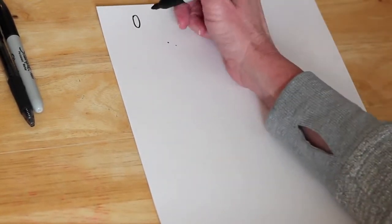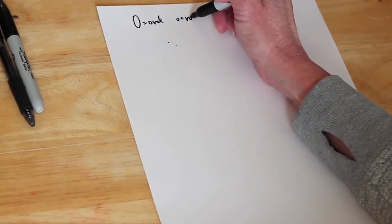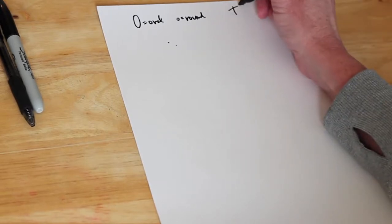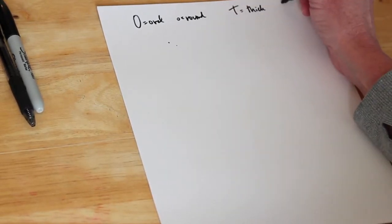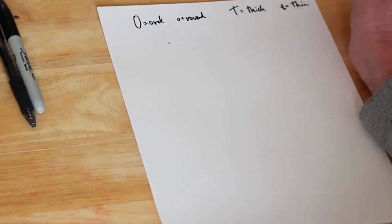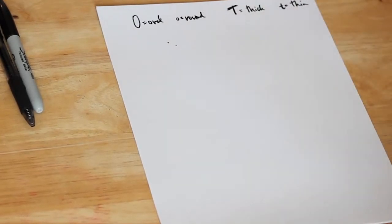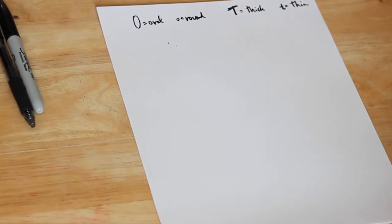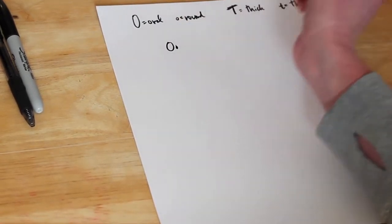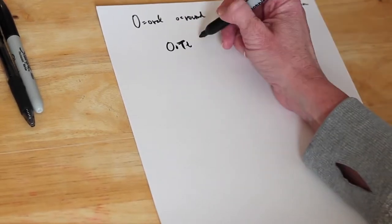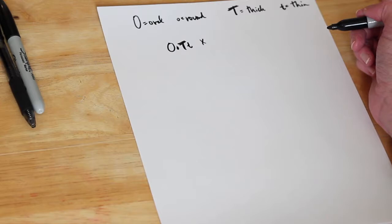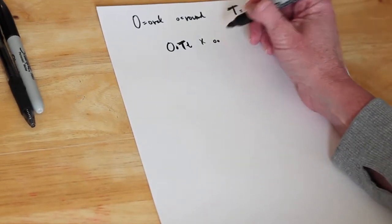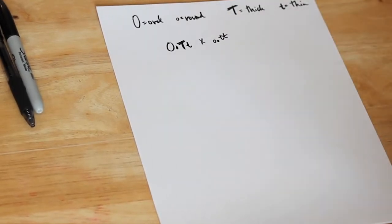Lastly, a problem about bacterial shape — a two-trait cross. In bacteria, oval is dominant to round-shaped cells, and thick-walled bacteria is dominant to thin-walled cells. We'll cross a heterozygous oval thick-cell-walled bacterium — big O, little o, big T, little t — with a thin-walled round bacterium. The only way to be round is two recessive copies, and the only way to be thin-walled is two recessive copies.